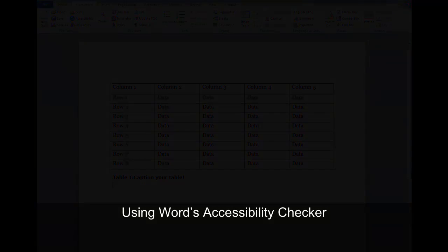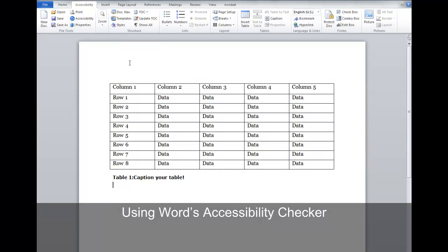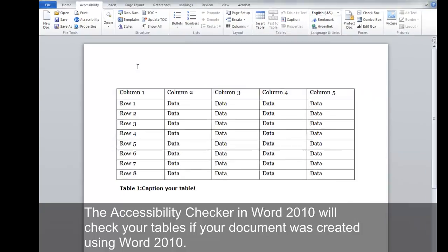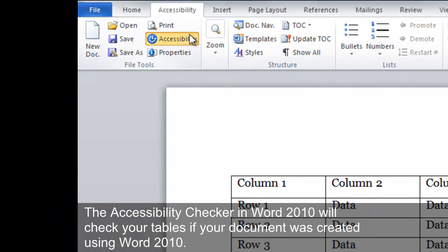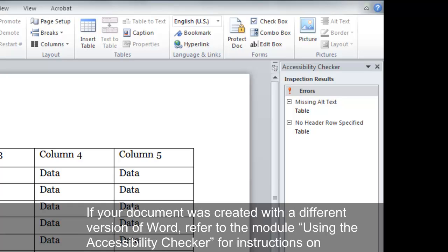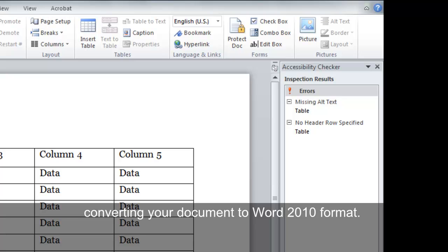Using Word's Accessibility Checker. The Accessibility Checker in Word 2010 will check your tables if your document was created using Word 2010. If your document was created with a different version of Word, refer to the module using the Accessibility Checker for instructions on converting your document to Word 2010 format.